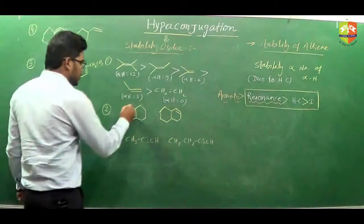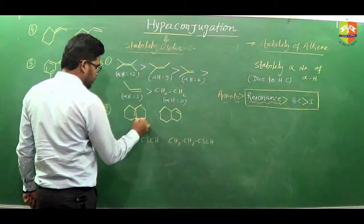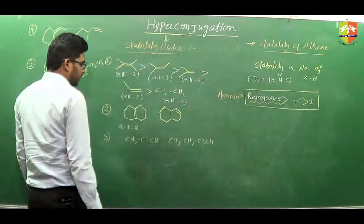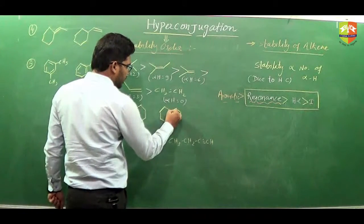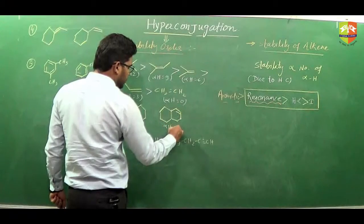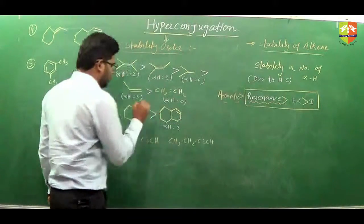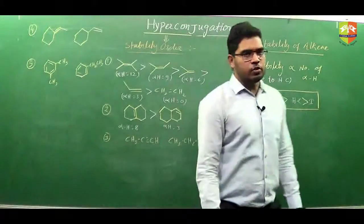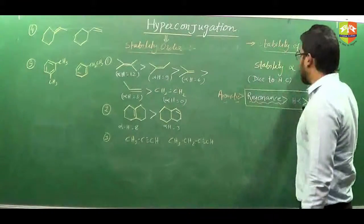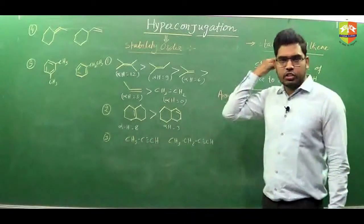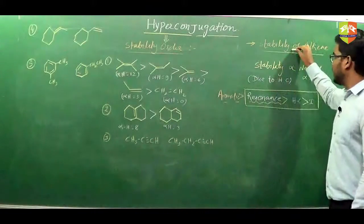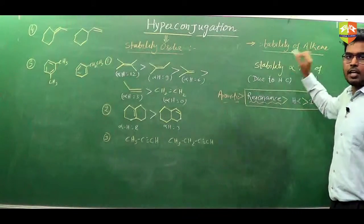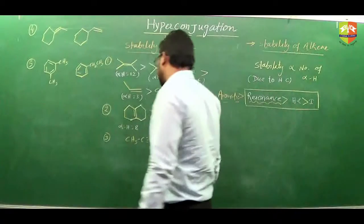These are the alpha positions. Alpha hydrogens will be 8, and at the other alpha positions it is 3. More alpha hydrogens means more stability. I should also mention that hyperconjugation is possible in alkenes as well as alkynes. So wherever I have written alkene, carbocation, and free radical, add alkene or alkyne — in both, hyperconjugation is possible.